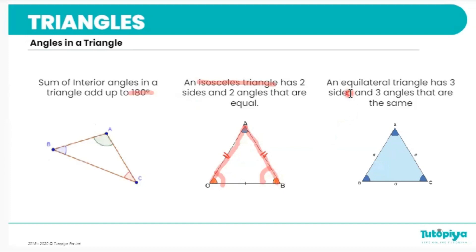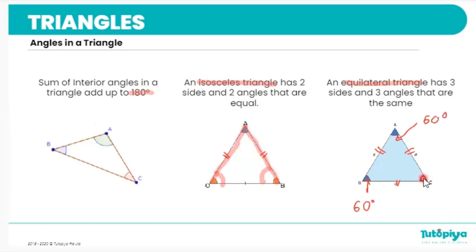The next type of triangle is equilateral triangles. In equilateral triangles, all three sides are the exact same length, which means all of the angles are also the exact same. In any triangle, all angles add up to 180 degrees, and in an equilateral triangle each angle is equal, so if I split 180 into three equal parts, each angle has a magnitude of 60 degrees. Every equilateral triangle, not just this one, has all three angles equal to 60 degrees.